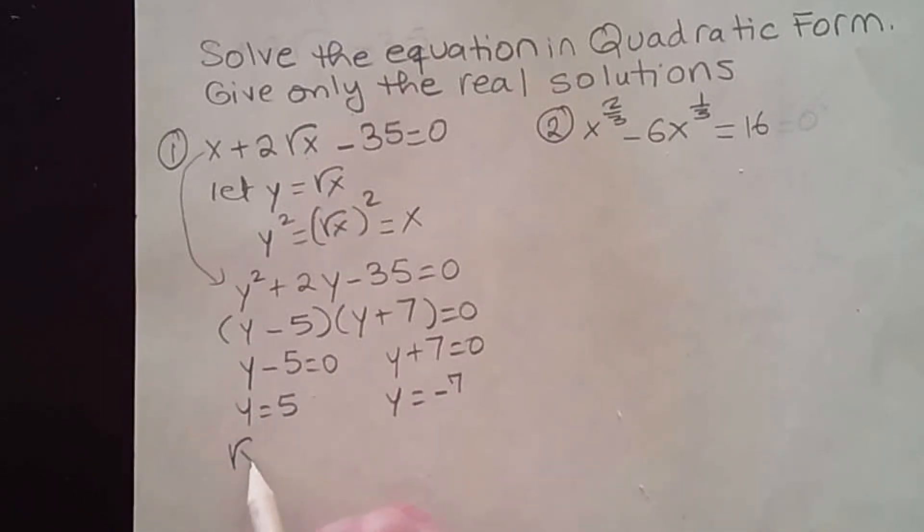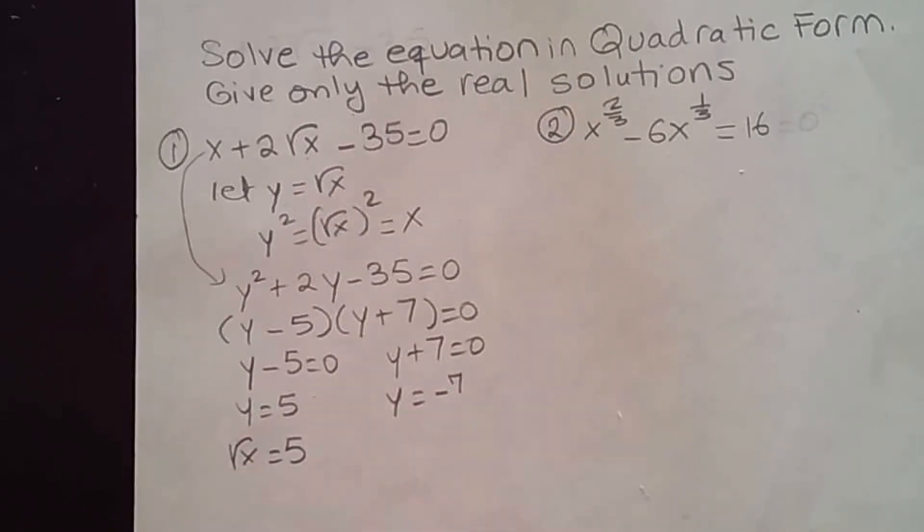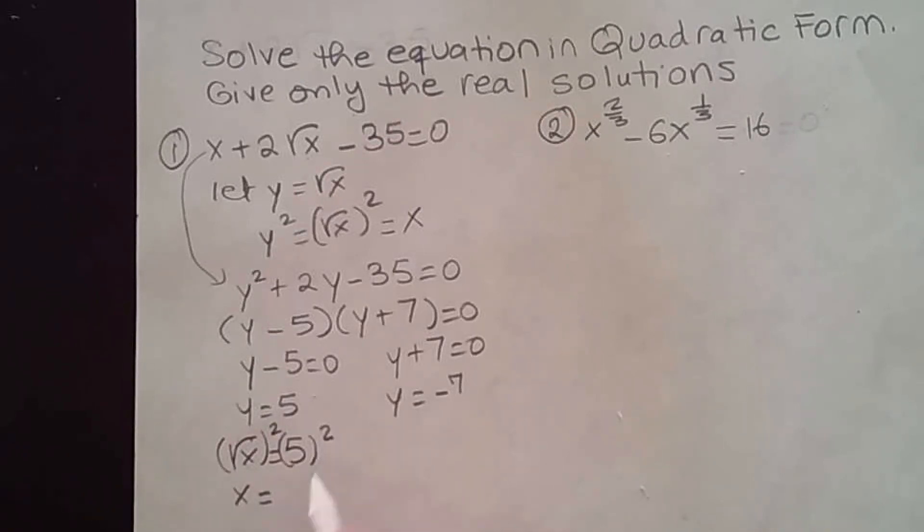So that gives us square root of x equal to 5. Now you need to get this out of the radical, so you square both sides. If you square both sides, the square cancels the square root and whatever is inside came out. So x is equal to 5 squared, or 25.